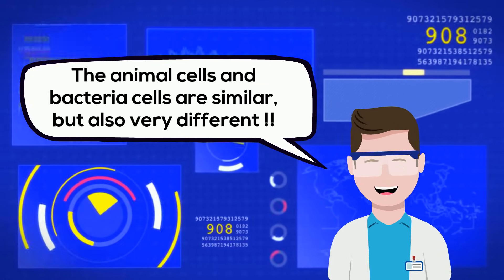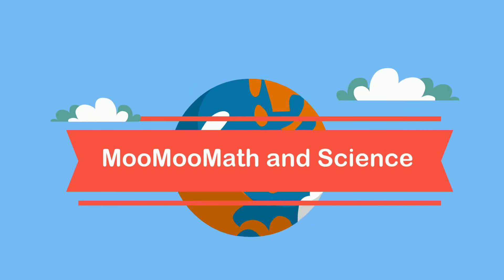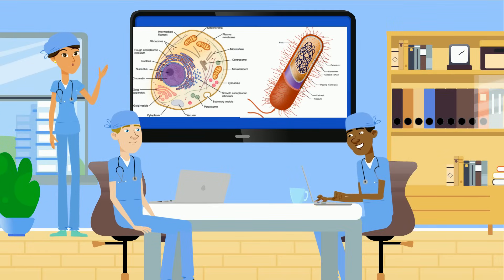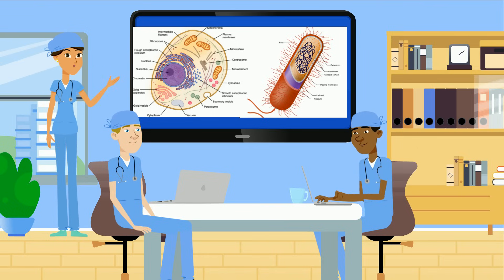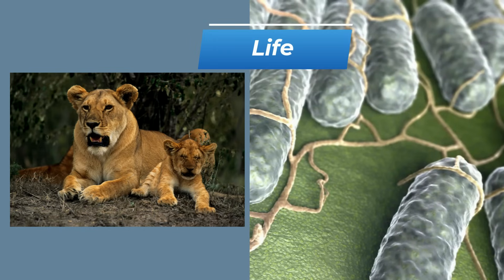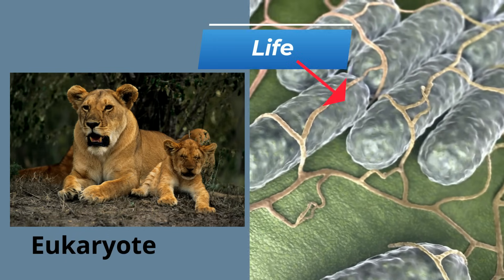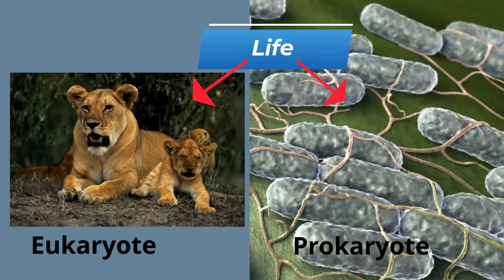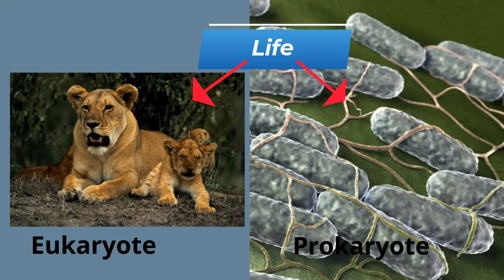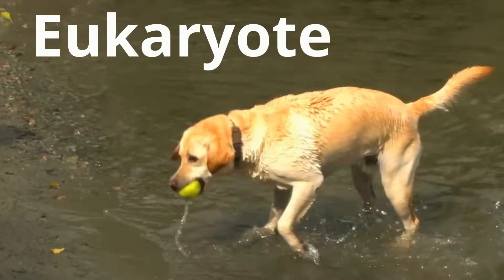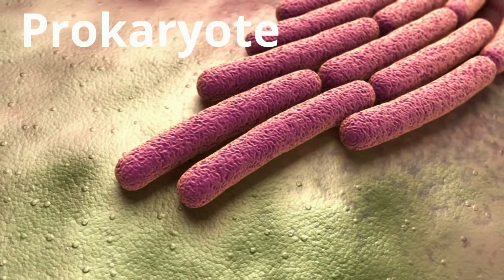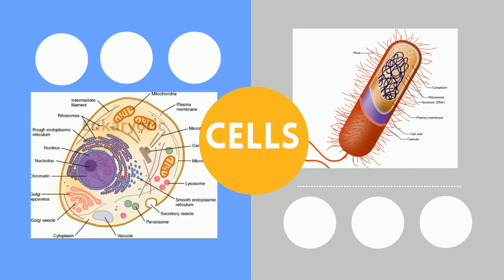Welcome to Moo Moo Math and Science and the difference between a eukaryotic cell and a prokaryotic cell. If you take a look at a prokaryotic cell and a eukaryotic cell next to each other, you would notice that in some ways they're different, but they're also the same in some ways. All of life can be classified as either a eukaryote or a prokaryote. When you refer to the organism, you use the term prokaryote or eukaryote — for example, this dog is considered a eukaryote, and bacteria are prokaryotes. When you refer to the individual cell, you use eukaryotic or prokaryotic.